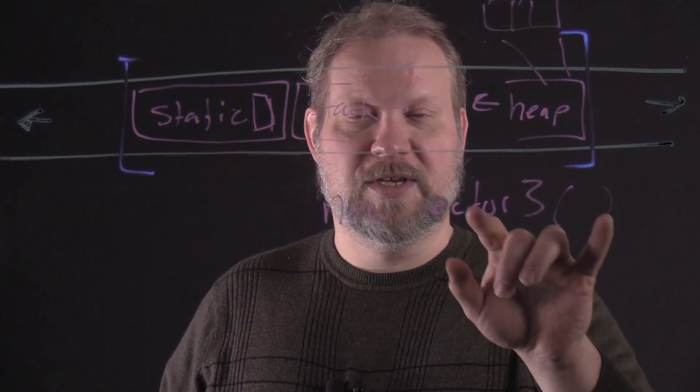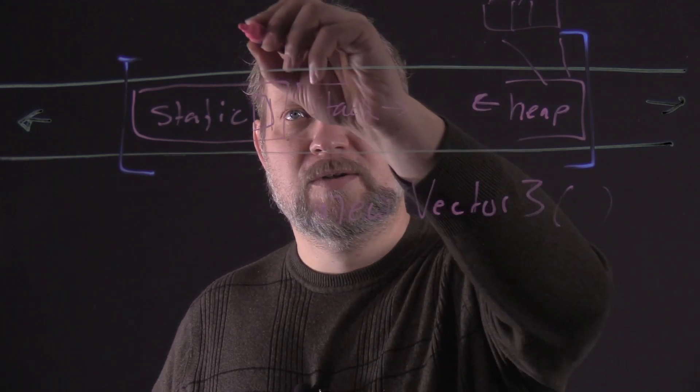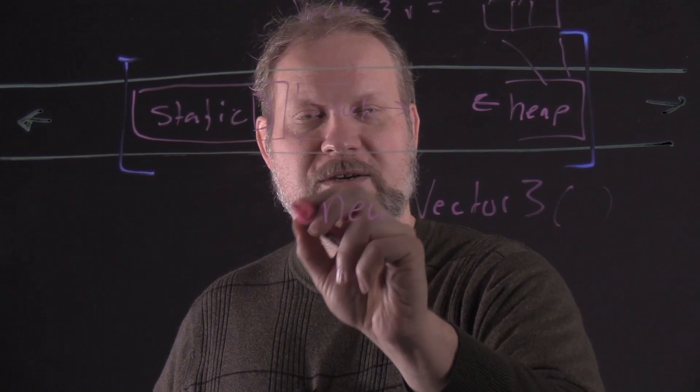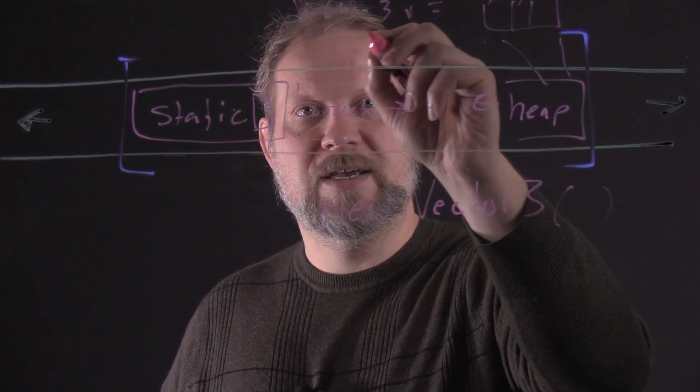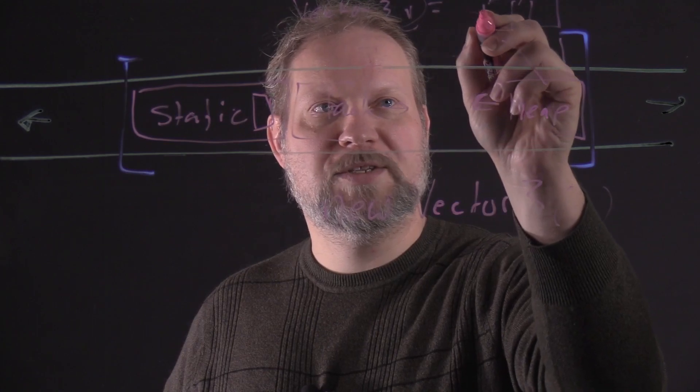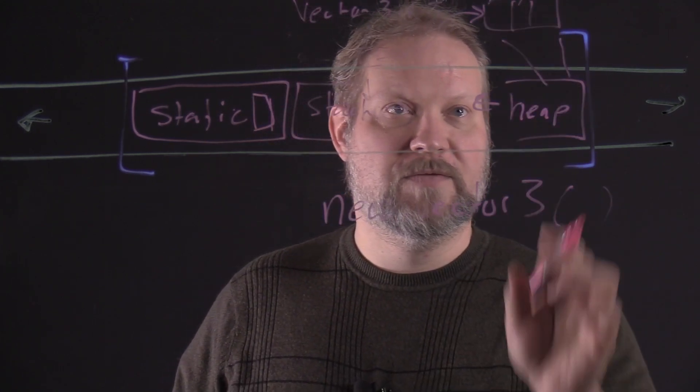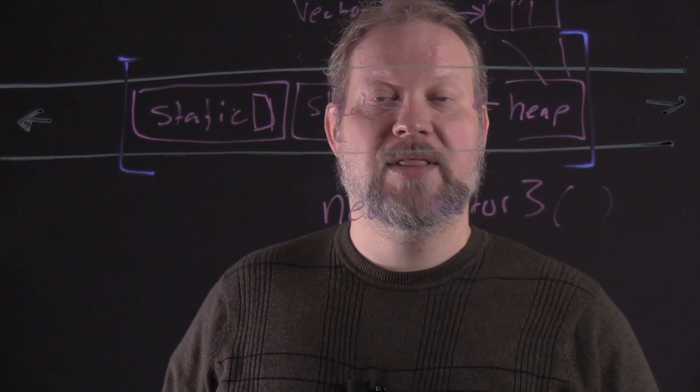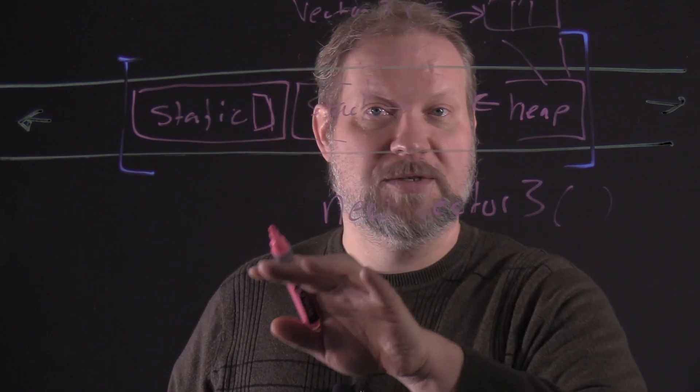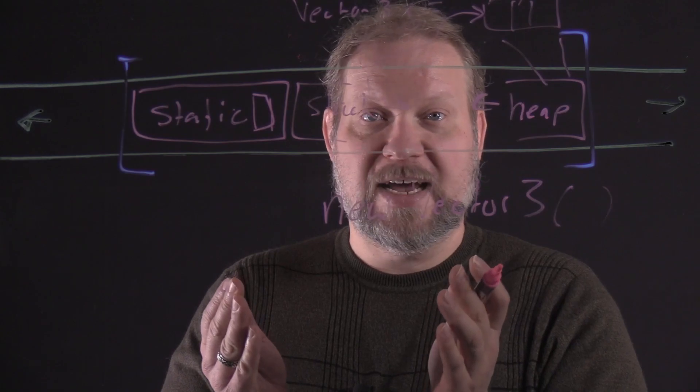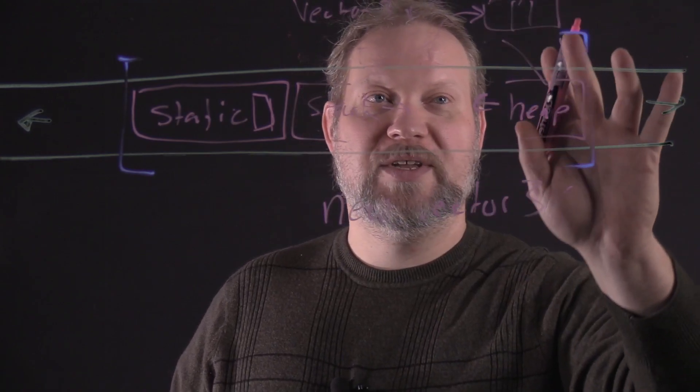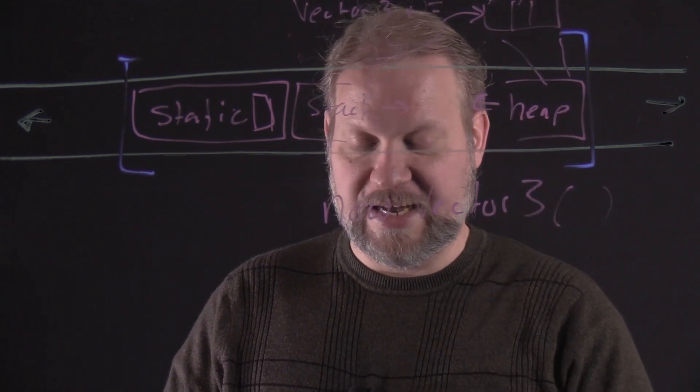This is why we call this a reference type. If we declare a variable vector3 v equals new vector3, what that actually is doing is it will allocate v here on the stack, and it references or points to where the actual x, y, and z are stored on the heap. That's why we call it a reference type. Integers and doubles, those are value types. So when we declare a variable of that type, that space is directly used for that. But here we're actually using the space allocated for v to hold a reference or an address of where its actual data exists in the heap.